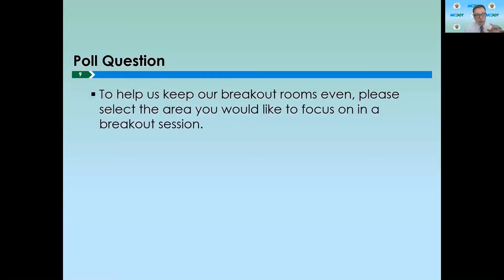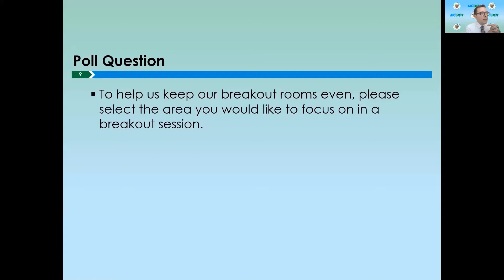We want to try and keep the breakout groups small, so to gauge where people's interests lie, we're going to start a poll question now. We're going to ask if you'd like to go to the breakout group talking about Fenton Village, which is the area from Gist Avenue up to Wayne Avenue; Downtown Silver Spring, from Wayne Avenue up to Colesville Road; or the North End, from Colesville Road up to Cameron Street. Based on the responses, we will have enough breakout groups to allow for a small group conducive to good discussion.